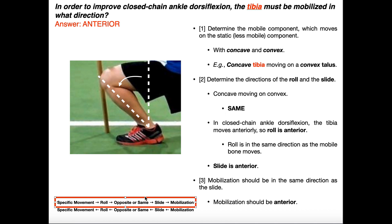Now we have everything we need for closed chain. The specific movement is closed chain ankle dorsiflexion, and the tibia is the mobile bone. Starting from a vertical position and lunging forward, the tibia is clearly moving anteriorly, so the roll is anterior. Since roll and slide are in the same direction, the slide is also anterior. And since mobilization is always in the same direction as the slide, we must mobilize the tibia anteriorly.